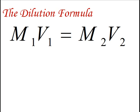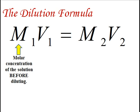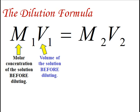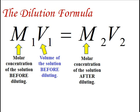The dilution formula is M1V1 equals M2V2, where M1 is the molar concentration of the solution before diluting, V1 is the volume of the solution before diluting, M2 is the molar concentration of the solution after diluting, and V2 is the final or total volume of the solution after diluting.